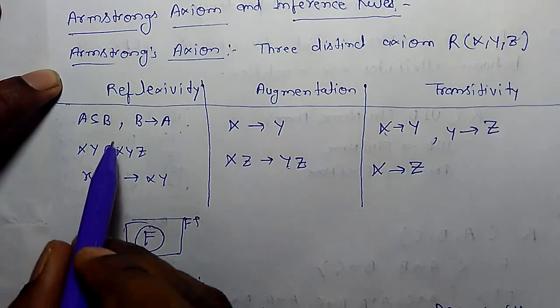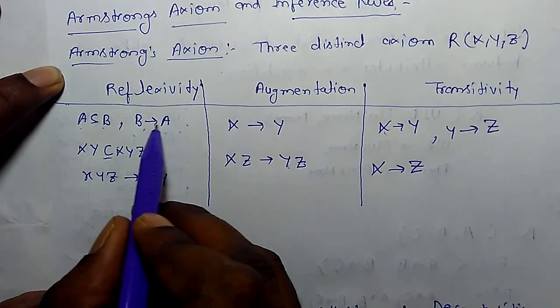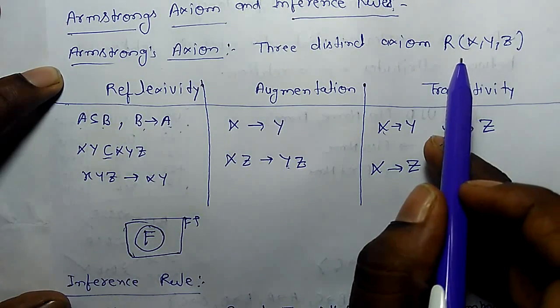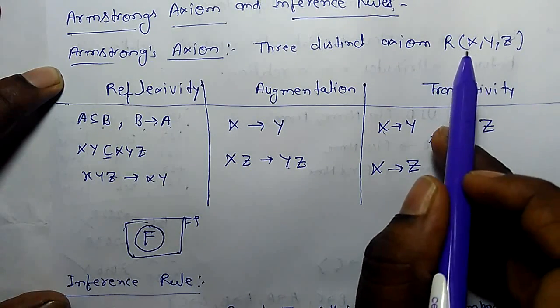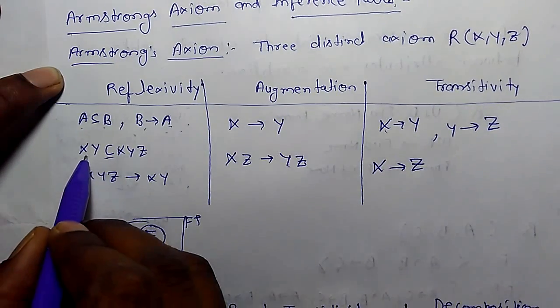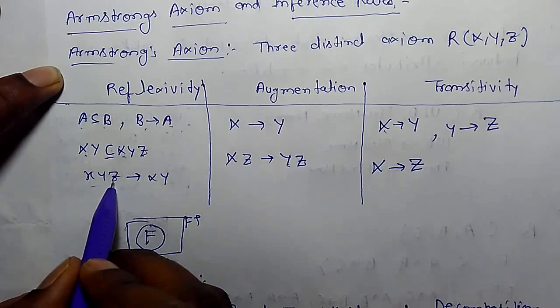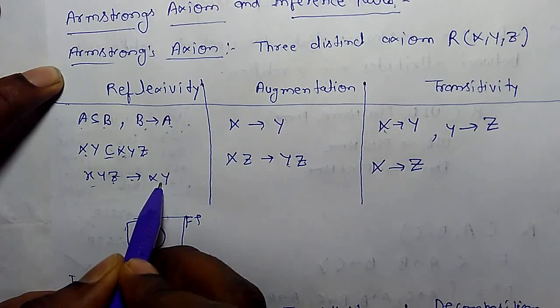Reflexivity says if A is subset of B then B can functionally determine A. For example, there is a relational database where x, y, z are attributes. So x, y is a subset of x, y, z. That's why x, y, z functionally determines x, y.